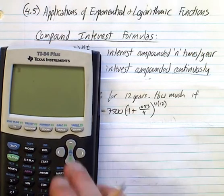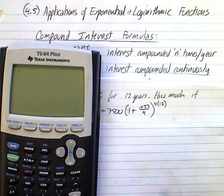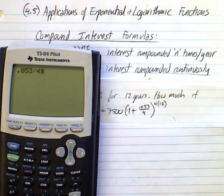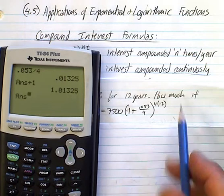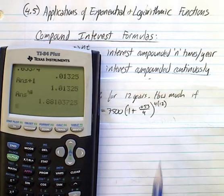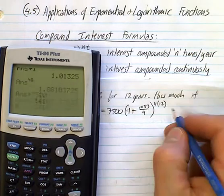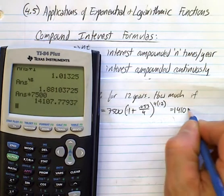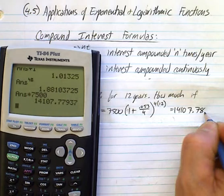We're multiplying it by 1 plus. Now, your rate is 0.053 compounded quarterly, so that's 4 times a year, and that's 4 times a year for 12 years. So, what you're going to do in your calculator is simply that. I'm going to start in the middle. 0.053 divided by 4, and then I add the 1. To the power of 4 times 12 is 48, and then I multiply it by the original amount, and I have an answer of $14,107.78.